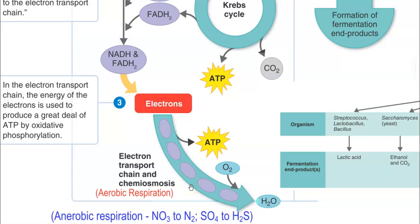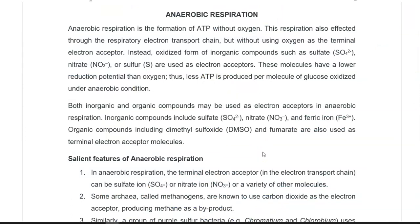Whereas in anaerobic respiration, it will be the oxidized form of inorganic compounds such as nitrate or sulfate. For example, nitrate accepts the electron and forms nitrogen gas, which escapes into the atmosphere. Sulfate can accept the electron in the electron transport chain and forms hydrogen sulfide. These are alternate electron acceptors present in the environment, favoring the growth of organisms under anaerobic conditions where oxygen is lacking.